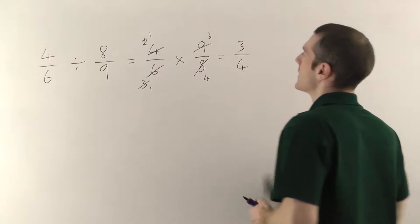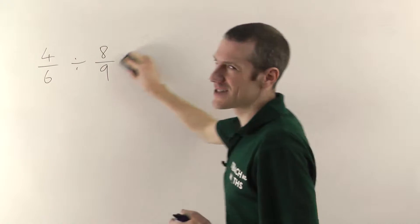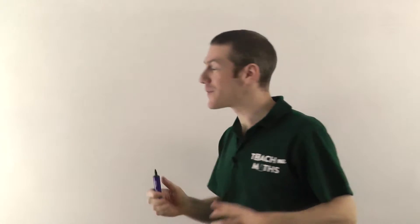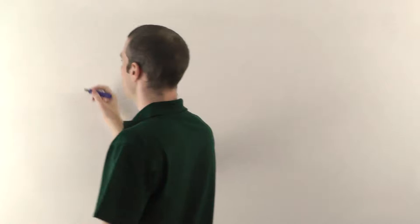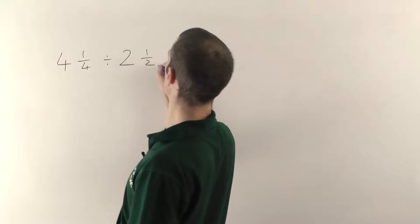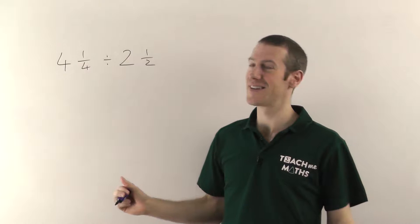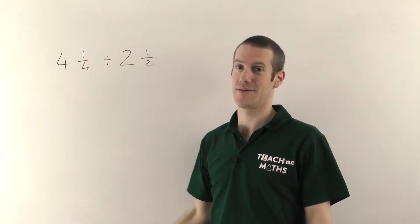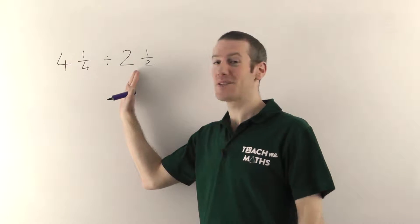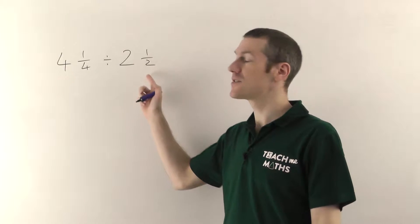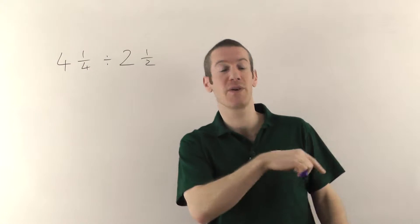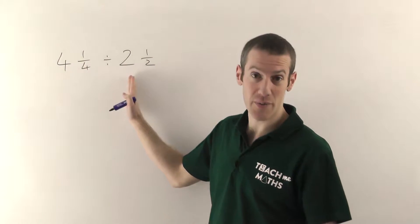I'll just show you one more example, because sometimes mathematicians like to throw in mixed numbers on these kinds of questions. And there's a very important rule you need to remember with mixed numbers. We'll have 4 and a quarter divided by 2 and a half. The rule is you can't do maths on mixed numbers — you just can't do it, so don't even try. If you see mixed numbers in any kind of fraction question the first thing you need to do is turn them into top heavy fractions — sometimes people call them improper fractions. If you're not sure how to do that you can go and watch my video on converting between mixed numbers and top heavy fractions.